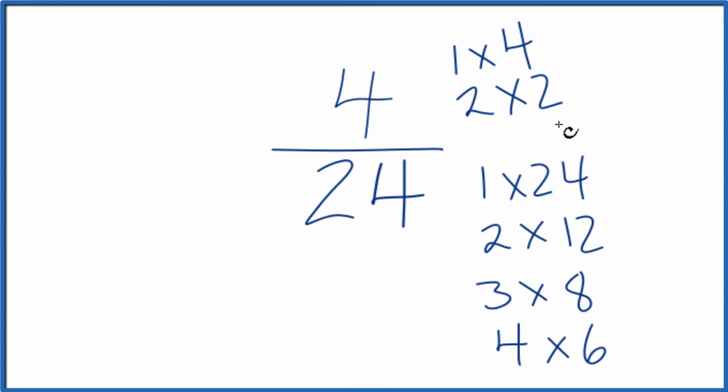We look for the greatest common number here between them, the greatest common multiple, and that's going to be 4.